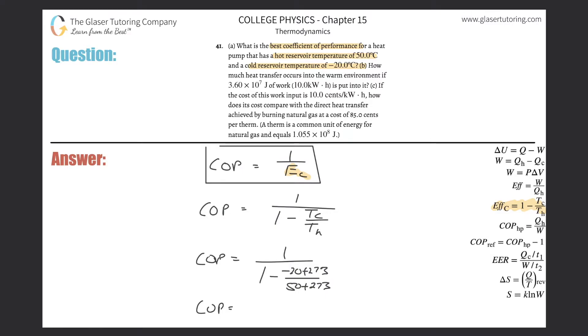Simply plug it into the calculator. So I'm going to do the denominator portion. So negative 20 plus the 273 divided by 50 plus the 273, and then one minus that value. The denominator is about 0.2. And then when you do the math, one divided by that, it works out to be about 4.61. So 4.61, that's the best possible coefficient of performance. All right, so that takes care of letter A.